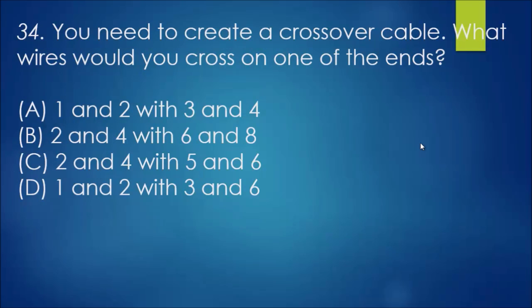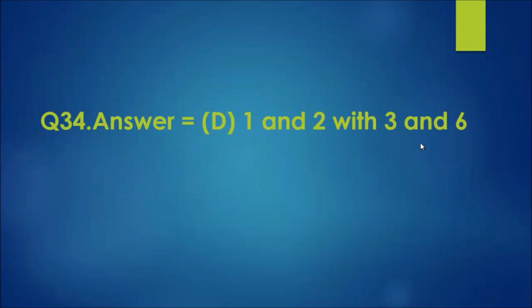For question 34, you need to create a crossover cable. What wires would you cross on one of the ends? I know this answer off by heart, but the answer is D: one and two with three and six. So there's eight cables inside, or little parts to the cable, that have to be properly jacked into the RJ-45 connector for it to be able to connect to a network.